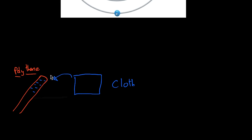Because those extra electrons are now on the polythene rod, the polythene becomes negatively charged. The cloth has lost those electrons, so the cloth becomes positively charged — not because it gained anything from the polythene, but because it lost electrons. The nucleus doesn't move; only electrons transfer. Since neither is a conductor, the charge stays put — they remain statically charged. Eventually those electrons will be lost, perhaps to the air, but for now both objects hold their charge.